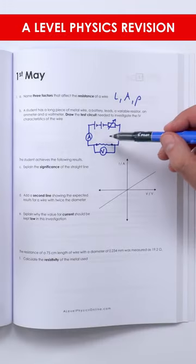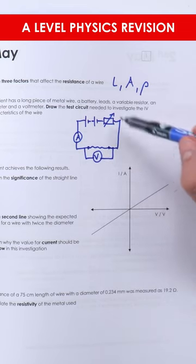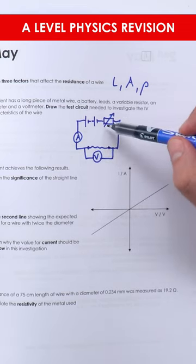For the second part, we need a circuit to test this. Here I have an ammeter to measure the current through the wire, the potential difference across it measured with a voltmeter, and a variable power supply.